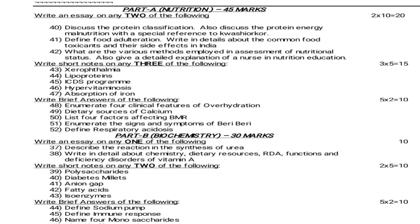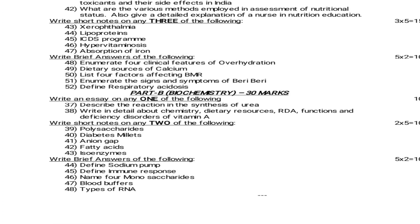Biochemistry for November 2014 — 30 marks. Essay questions: Describe the reactions in the synthesis of urea. Write in detail about chemistry, dietary sources and recommended daily allowances, functions and deficiency disorders of vitamin A. Short notes — 5 marks: Polysaccharides. Diabetes mellitus. Anion gap. Fatty acids. Isoenzymes. Brief answers — 2 marks: Define sodium pump. Define immune response. Name 4 monosaccharides. Blood buffers. Types of RNA.